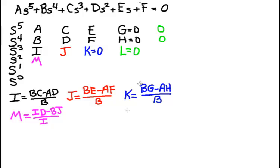Now calculate M. M is equal to I times D minus B times J divided by I. Calculate N. N is I times F minus B times K divided by I.